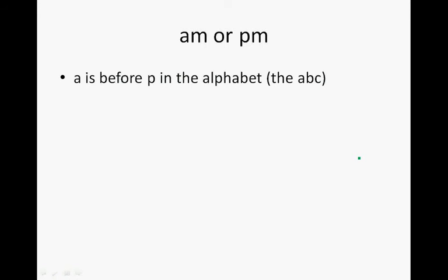Now in the alphabet, A is before P in the alphabet. Remember the alphabet is A, B, C, D, E, F, G. So A is in the beginning of the alphabet and P is more or less closer to the end or almost at the end. So therefore AM is before PM during the day.